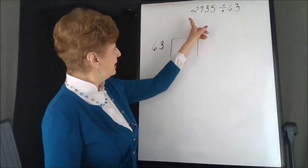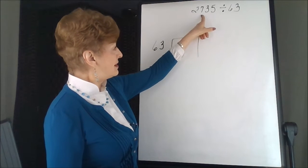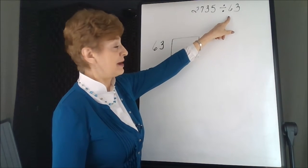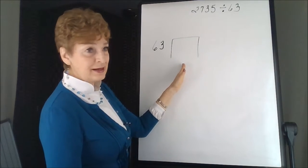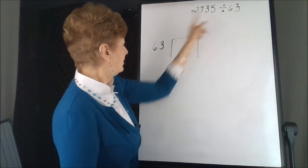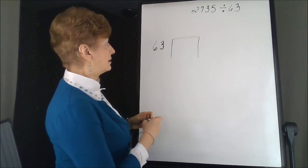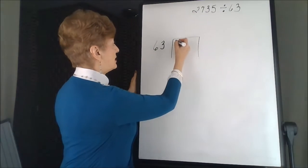Our next example, 2735 divided by 63. It shows up in the box method like this. The divisor is outside of the box. The dividend is inside of the box.